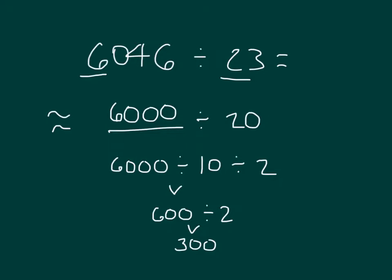So that's 6046 divided by 23 is about 300, and 300 is our estimated quotient.